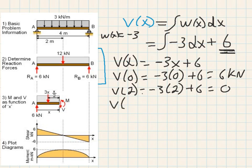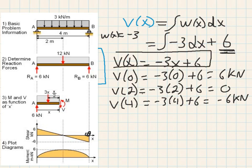And one more point, which is all the way to the end, which is at 4. Negative 3 times 4 plus 6 will give me negative 6 kilonewtons. Keep in mind that this shear, if you look at it closely, it reminds me that this finds you of y equals mx plus b.